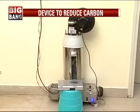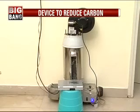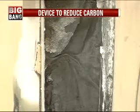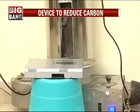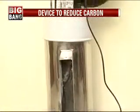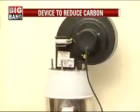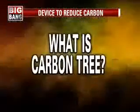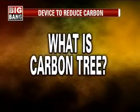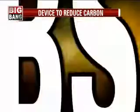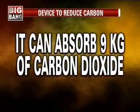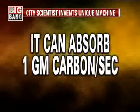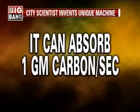This machine can be used in offices, hospitals and apartments. It works on electricity as well as battery. The main function of Moorthy's device is to absorb the carbon dioxide in the air. It can absorb 9 kilos of carbon dioxide in the air, and it can absorb 1 gram of carbon per second.